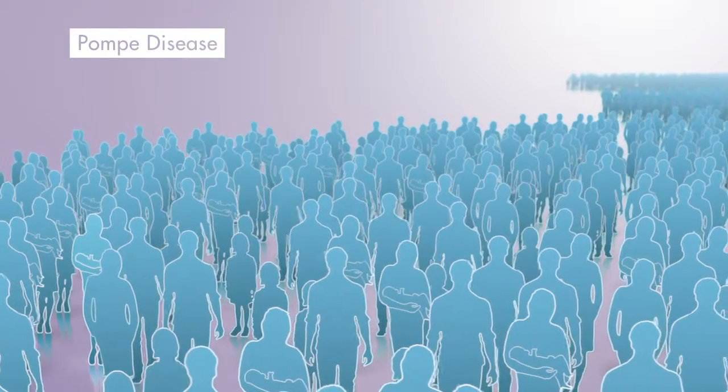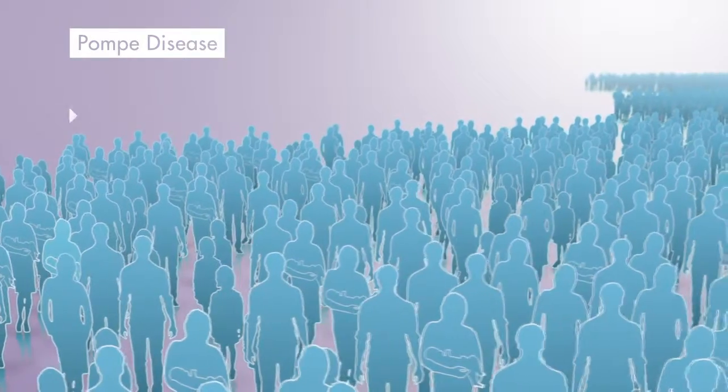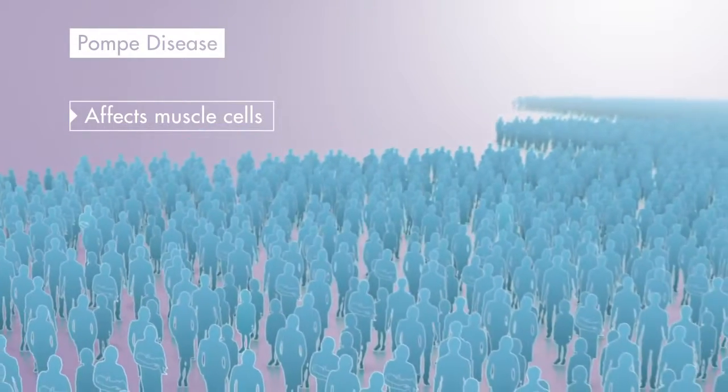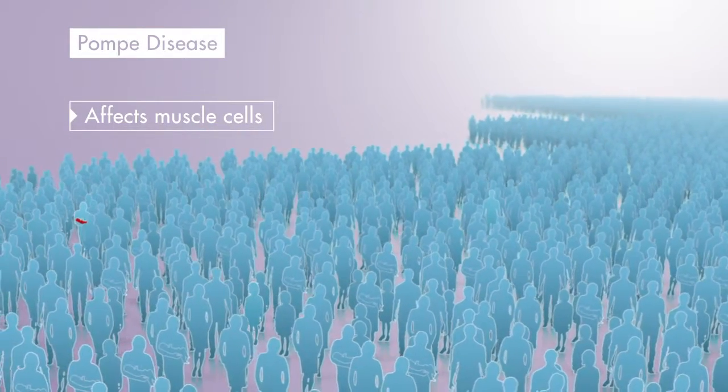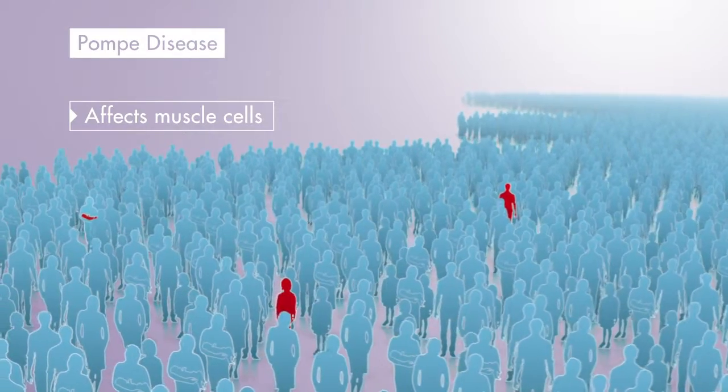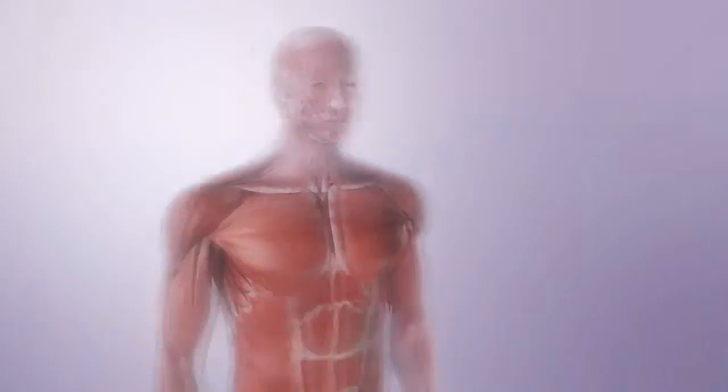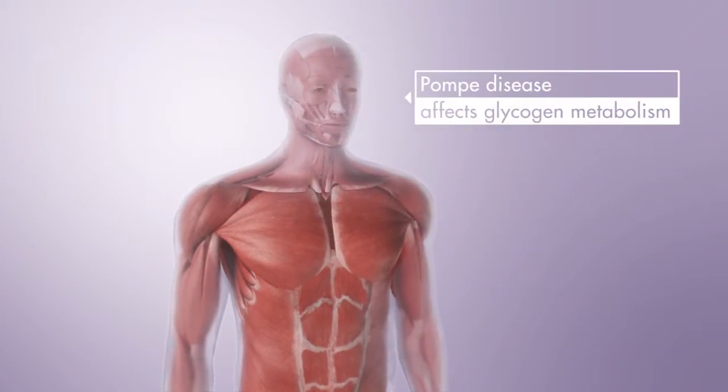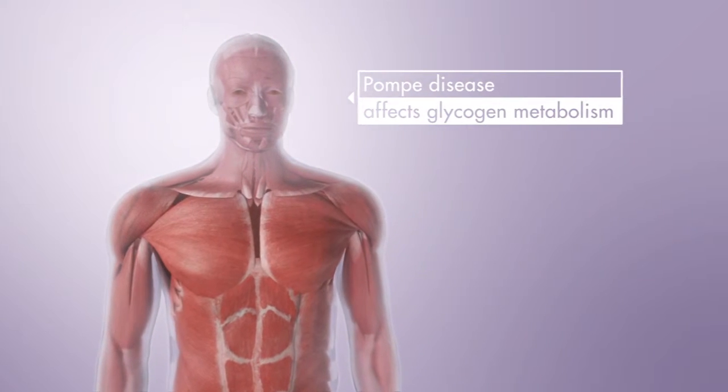Pompe disease is a genetic disorder affecting predominantly muscle cells. Although not common, the incidence of Pompe disease is about 1 in 40,000 individuals. Pompe disease is characterized by relentless progression of muscle weakness.